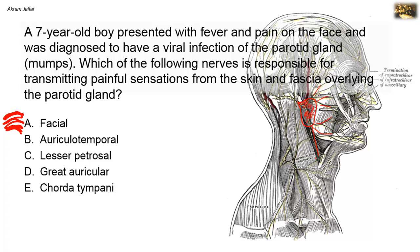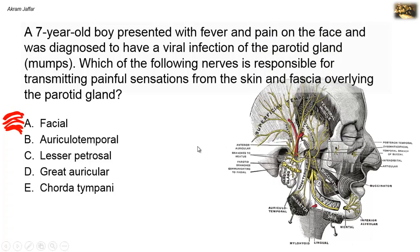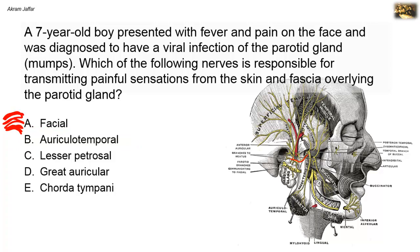The facial nerve carries some sensory fibers from a small area of the auricle, but not from the parotid gland. The next option is the auriculotemporal nerve, a branch of the mandibular nerve. It passes posteriorly, medial to the neck of the mandible, and enters the substance of the parotid gland. As its name indicates, it supplies the auricle, external acoustic meatus, and the superficial part of the tympanic membrane, as well as the skin over the temporal region and the temporomandibular joint.